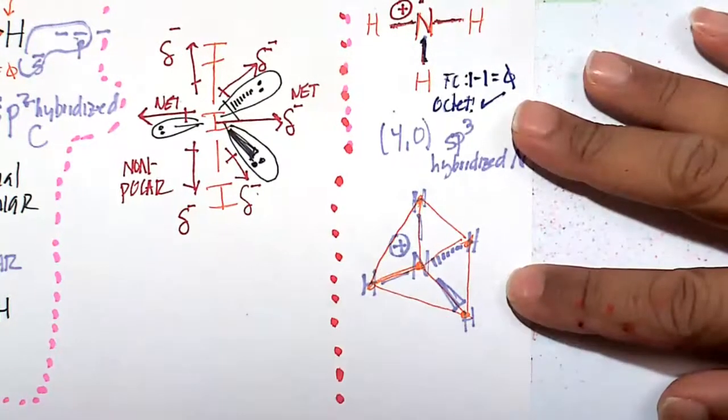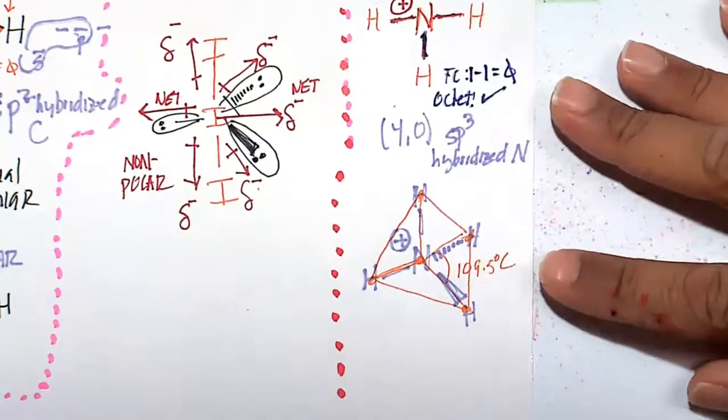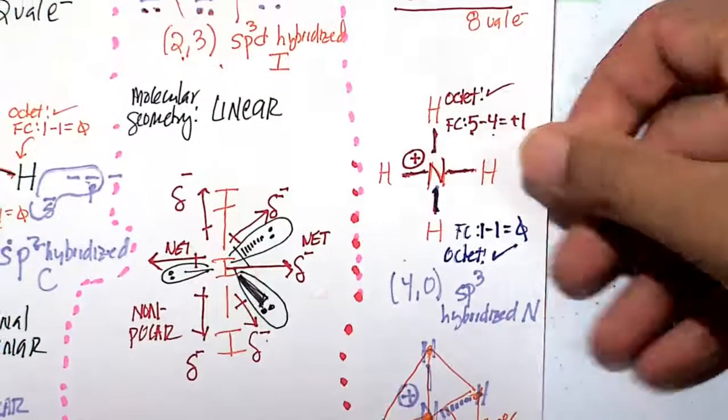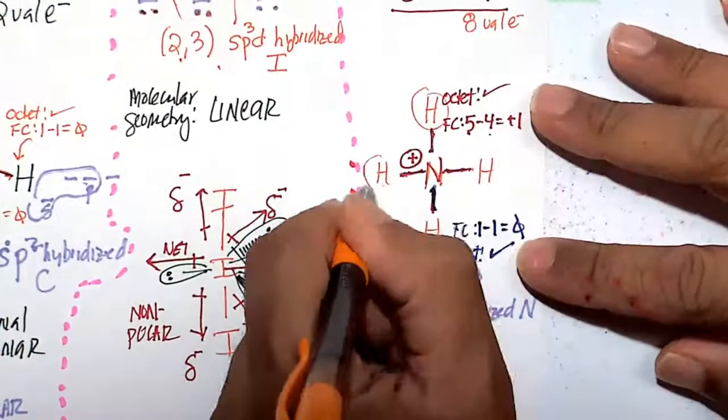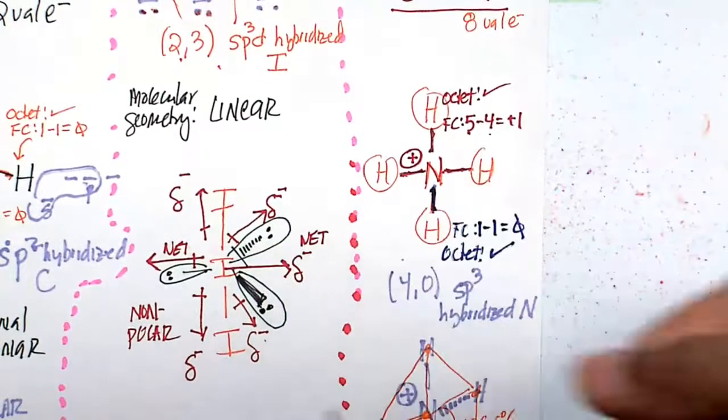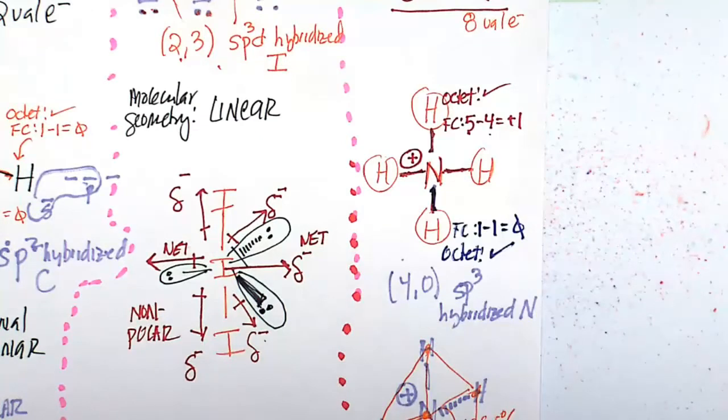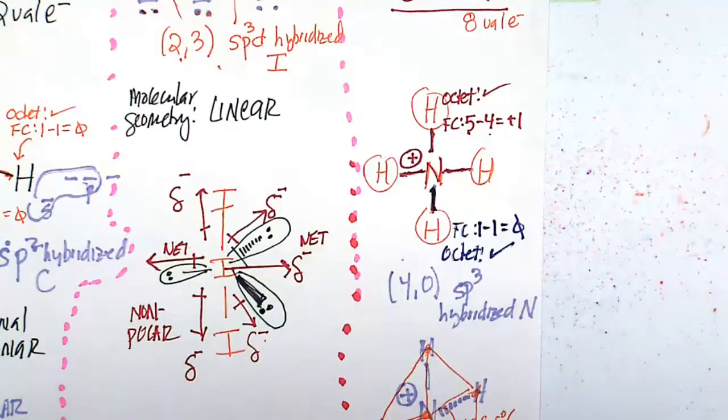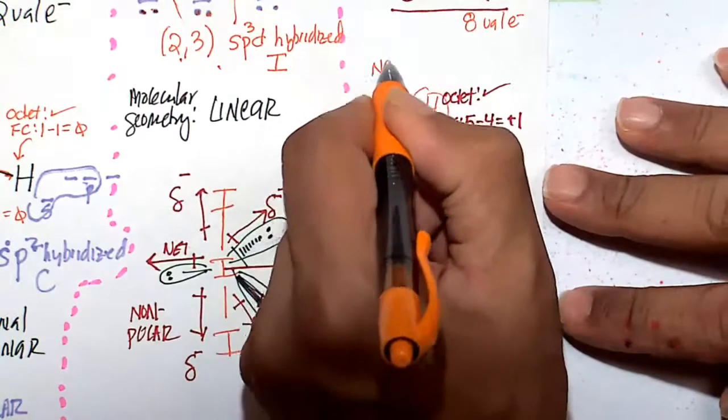Perfect bond angles of 109.5 degrees. And this is a non-polar molecule. It's a non-polar molecule because the hydrogens are virtually non-existent in electron pulling power. They are not your electronegative elements like oxygen, nitrogen, fluorine, halogen. So nothing is pulling. This is pure and simple, a non-polar molecule.